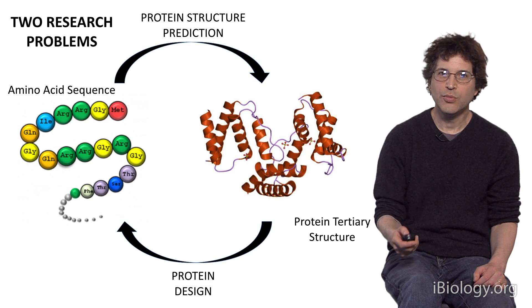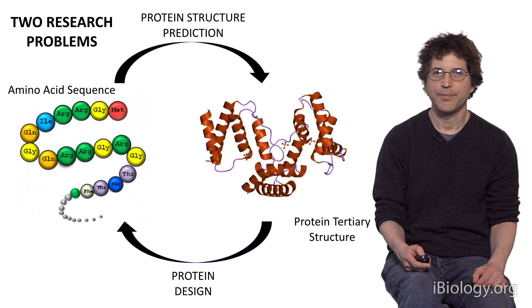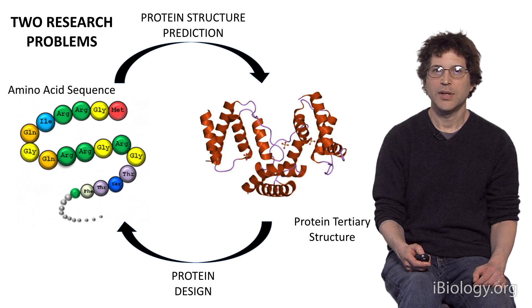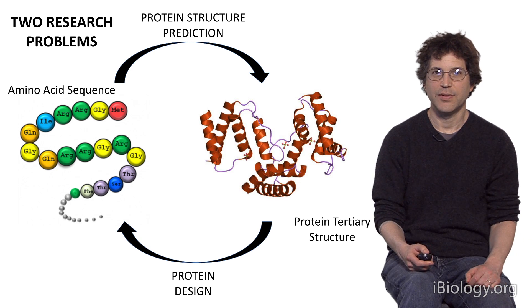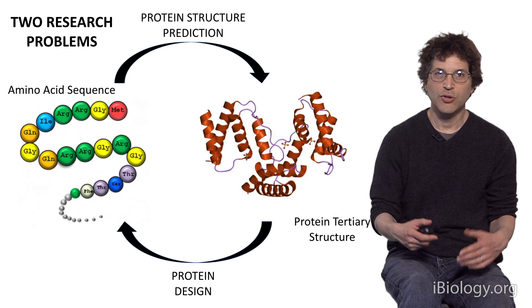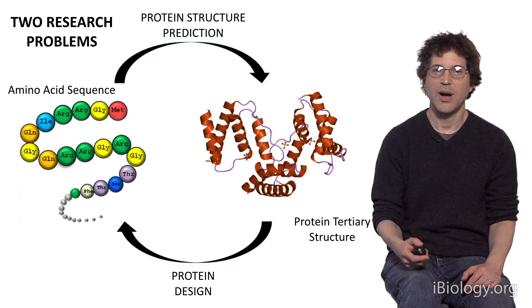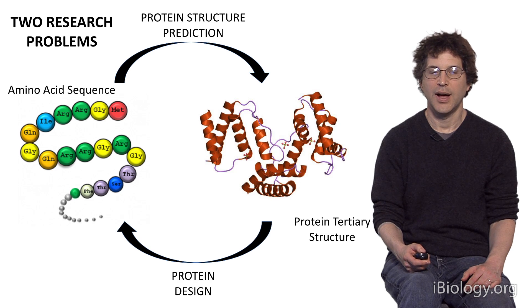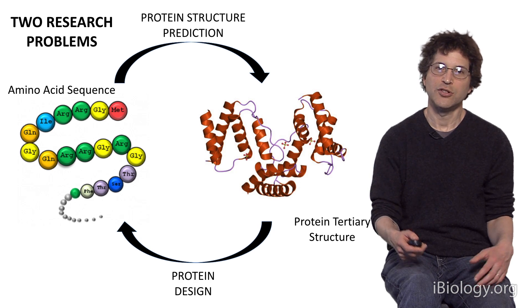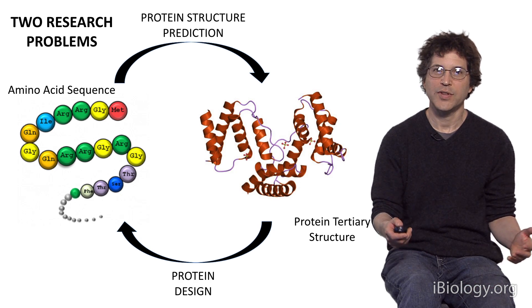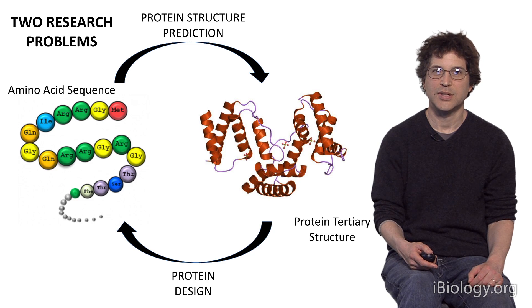There are two research problems I'm going to describe today. The first problem is the problem of predicting protein structure. In our genomes, we have on the order of 30,000 different genes, each encodes a unique protein, and each organism that exists on Earth has a different genome with a different complement of genes and hence proteins. So, there's a general problem of predicting what the structures and functions of these proteins are.